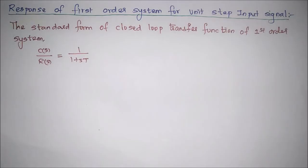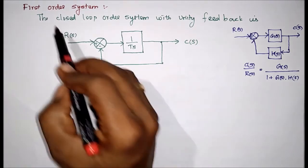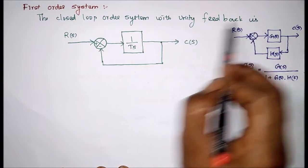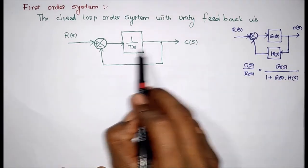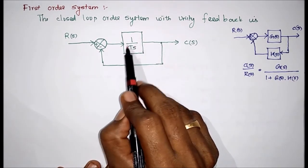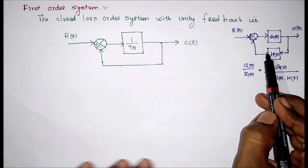In this video we are going to see the response of a first order system for a unit step input signal. We will look at the first order closed loop system with unity feedback. This is the closed loop system showing the system gain of the first order system with its feedback.